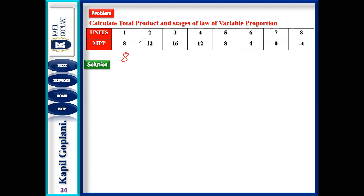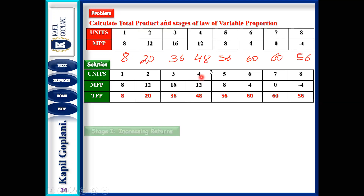So the first TP is 8. Then 8 plus 12 gives 20. Then 20 plus 16 gives 36. Then 36 plus 12 gives 48. Then 48 plus 8 gives 56. Then 56 plus 4 gives 60. Then 60 plus 0 gives 60. And 60 minus 4 gives 56. We simply add the MPs cumulatively to get TP, and this is your answer.